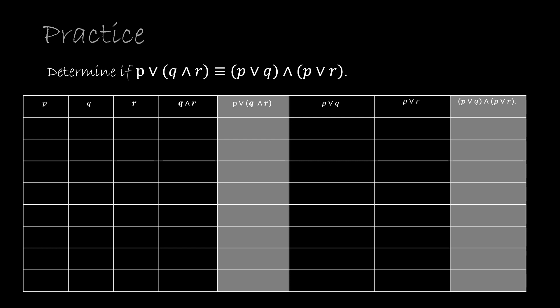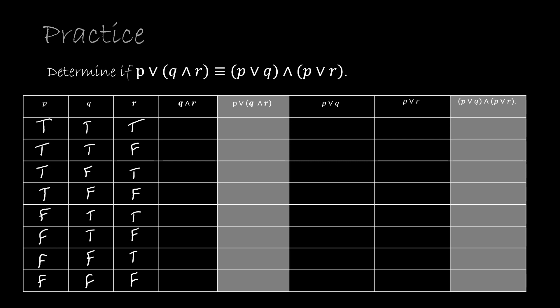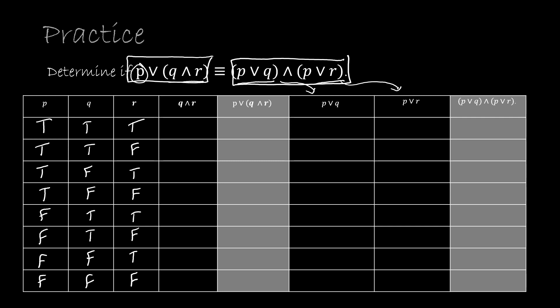Here's one for you to try on your own — press pause, try the question, then press play to see how you did. With three propositions P, Q, R, we take 2 to the third, giving eight rows. P alternates in blocks of four, Q in blocks of two, R alternates every row. We need columns for Q AND R, then P OR (Q AND R), and on the other side P OR Q, P OR R, and finally (P OR Q) AND (P OR R) — the ones in gray are the compound propositions we're comparing.